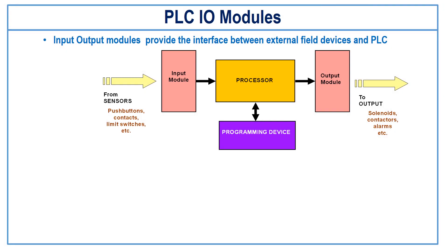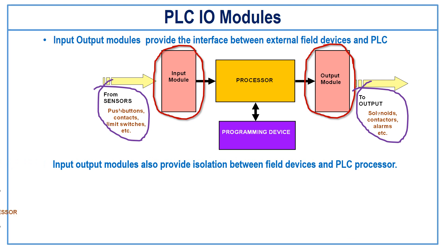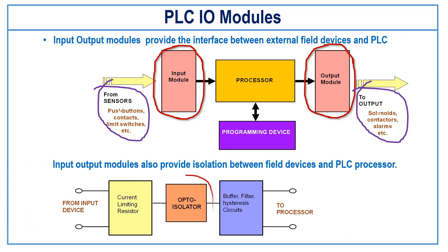The input and output modules are the fundamental components of a PLC system. The PLC's input and output modules provide the interface between the external field devices and the PLC. The input-output modules also provide isolation between field devices and the PLC processor.